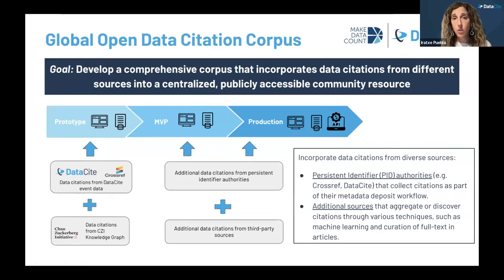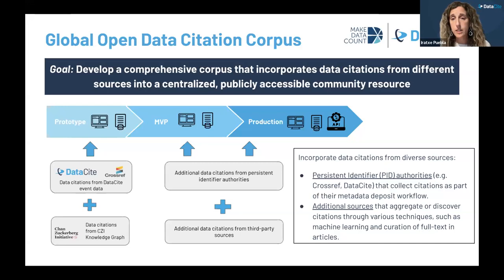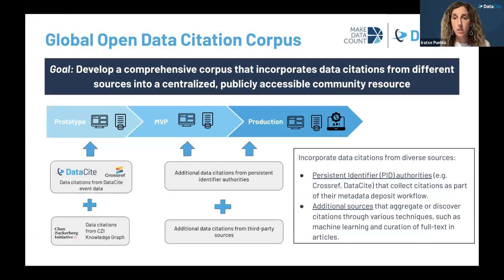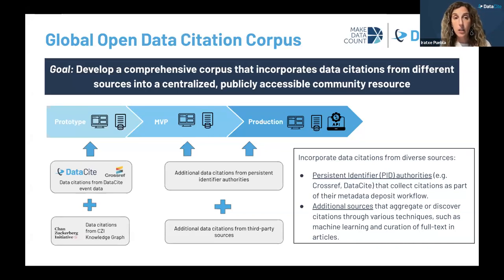We want this to be a comprehensive corpus that incorporates data citations from different sources into a single centralized resource that will be made available publicly to the community. The idea is to incorporate citations from different sources — including citations coming from the metadata deposit at persistent identifier authorities, but also from other sources doing work through their organizations and communities to identify mentions to data, for example by mining the full text of articles. We think we can aggregate all of those sources together into a single place.